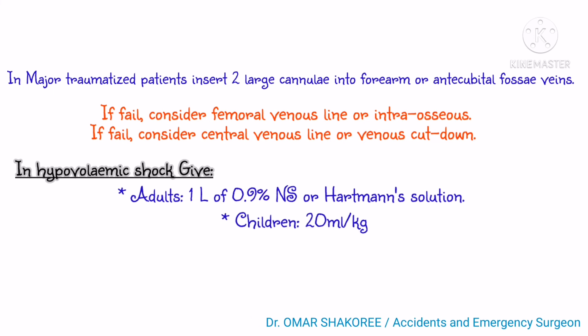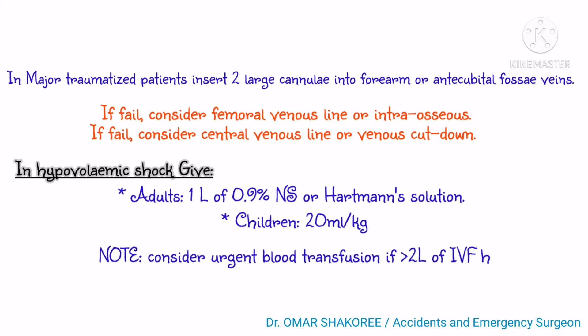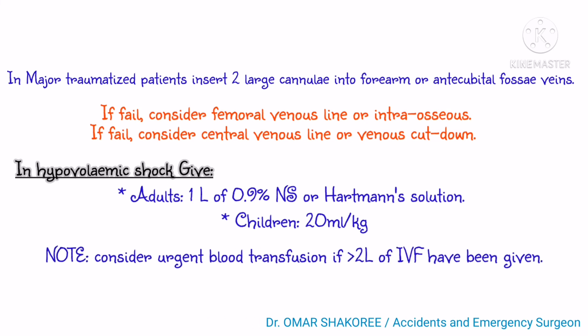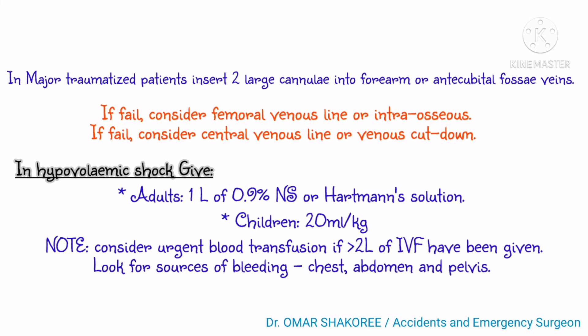The fluid given to adults is one liter of normal saline 0.9% or Hartmann's solution. In children, give 20 ml per kg as a bolus dose. Consider urgent blood transfusion if more than two liters of IV fluid have been given, and look for the source of bleeding.